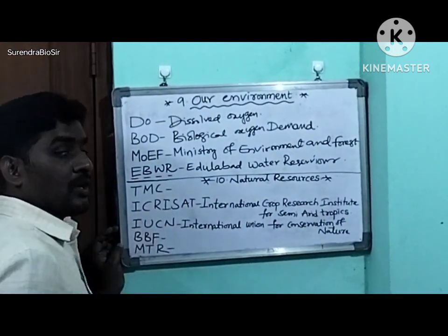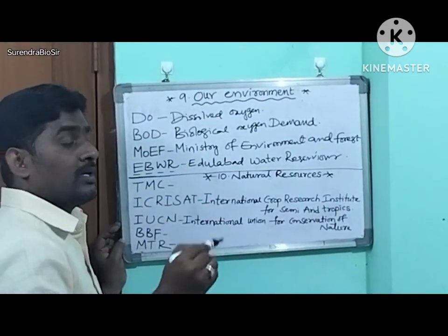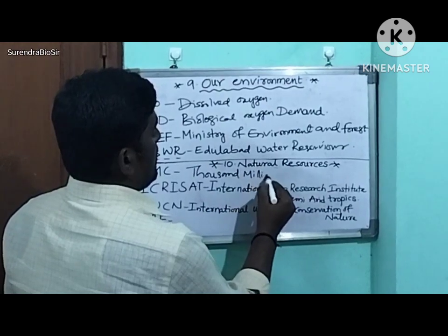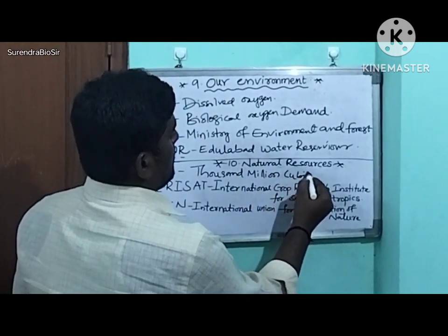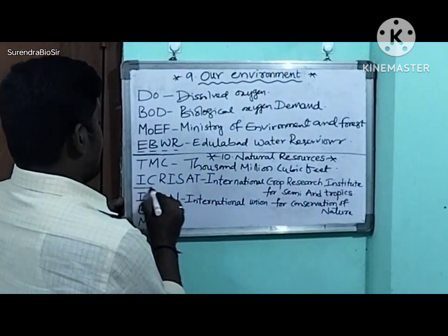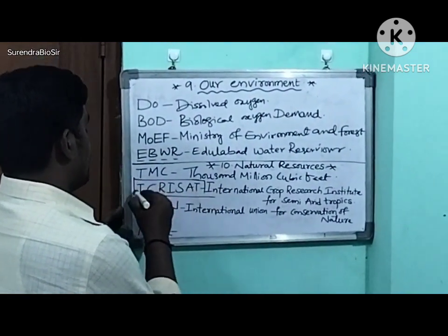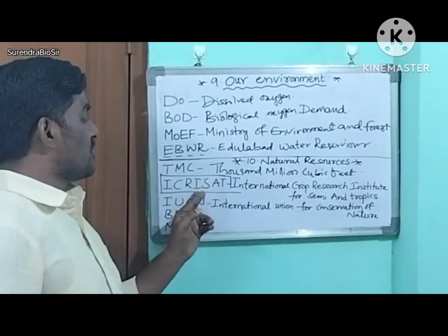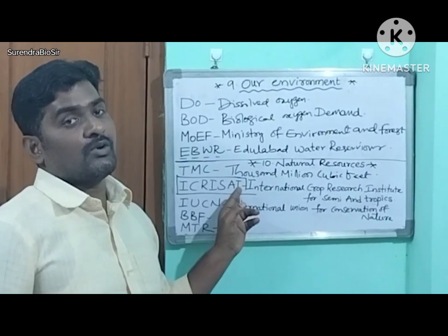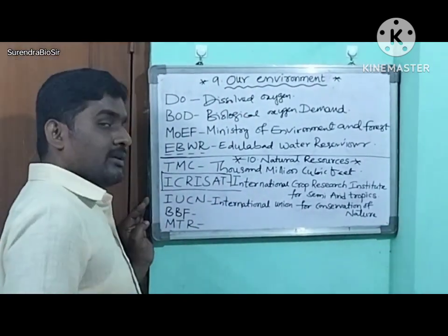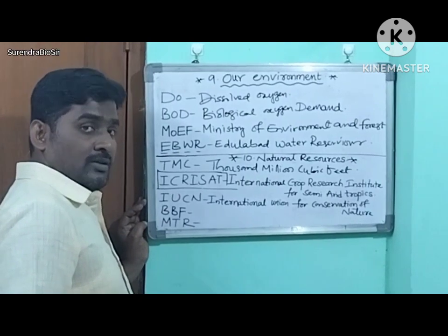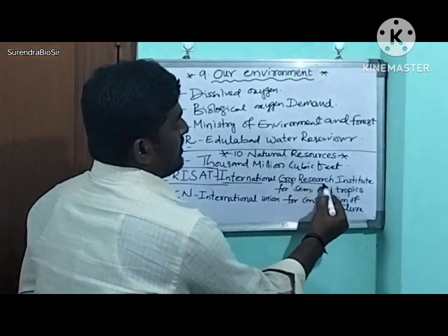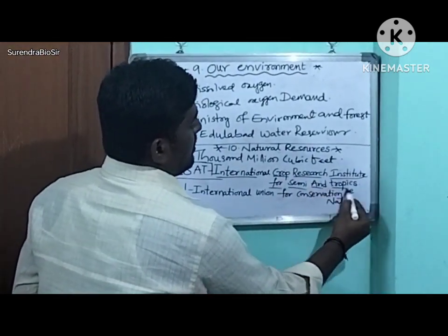Next: TMC — Thousand Million Cubic Feet. Next: ICRISAT — International Crops Research Institute for Semi-Arid Tropics, located in Hyderabad, Telangana. This is very, very important and has been asked many times in final examinations.